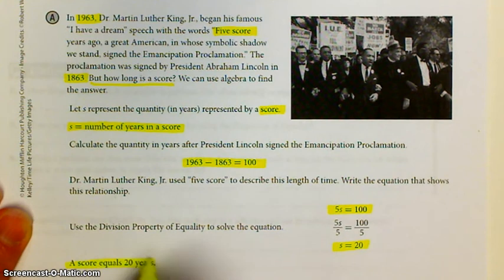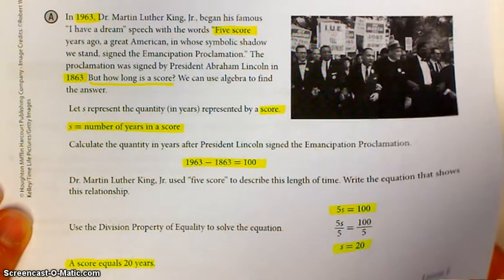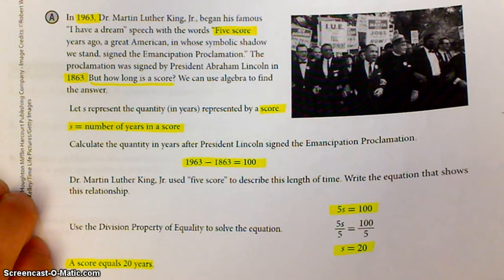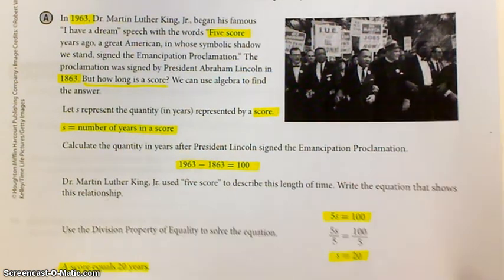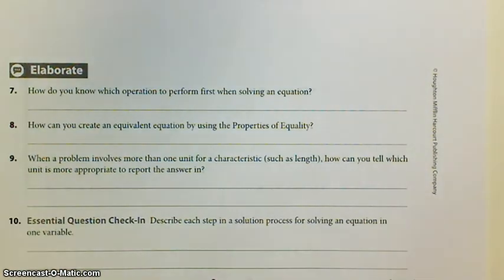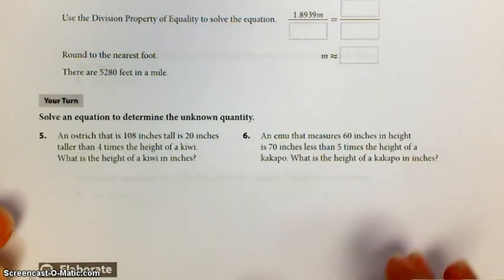The Gettysburg Address uses four score and seven years ago, so that would be 87 years because the score is 20. Let's go to page 8.